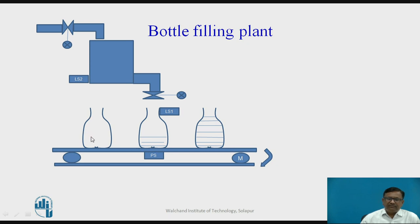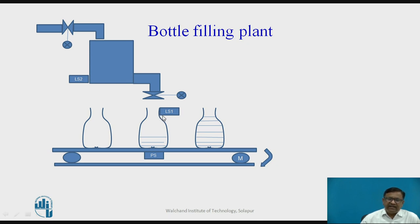Empty bottles are to be filled, and when they come under the output valve which is attached to the overhead tank — this is an overhead tank which consists of a liquid to be filled into a bottle using this valve — this valve can be opened and closed based on whether the bottle is filled completely or not. If it is filled completely, that is sensed by limit switch 1 (LS1).